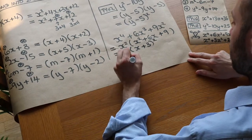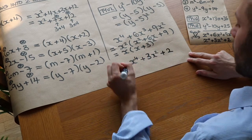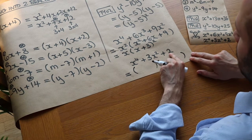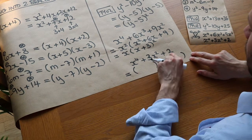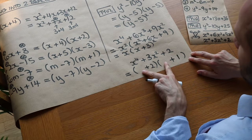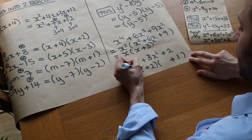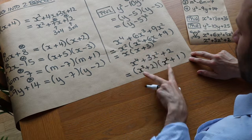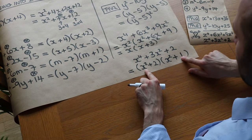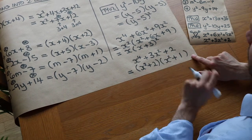Finally: x to the 4 plus 3x squared plus 2. We find two numbers adding to 3 and multiplying to 2, which are 2 and 1. However, instead of using x in each bracket, we use x squared, so that x squared times x squared gives x to the 4. This gives (x squared + 2)(x squared + 1), and checking the expansion: x squared plus 2x squared gives 3x squared, and 2 times 1 is 2. This level of difficulty wouldn't typically appear in GCSE.